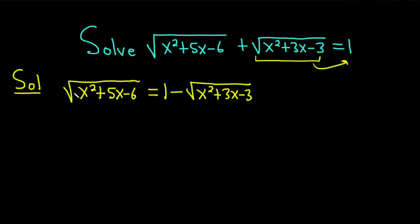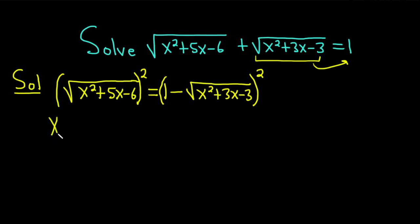To eliminate the square root, we can simply square both sides. On the left-hand side, when you square the square root, it goes away completely. So we just have x squared plus 5x minus 6, and that's equal to the right-hand side expansion.